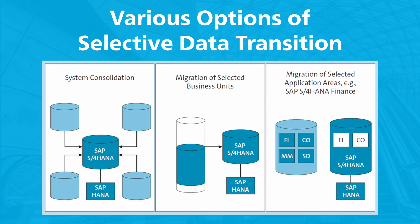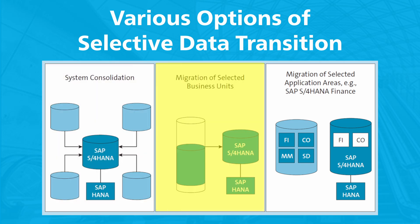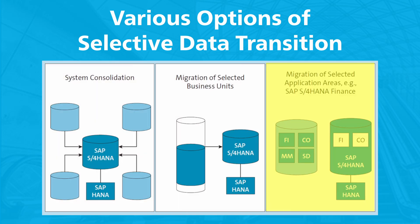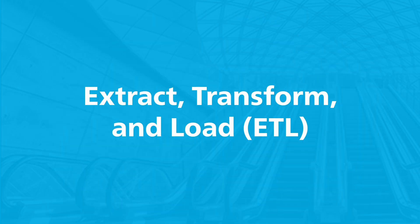This figure shows some examples of Selective Data Transition options: system consolidation — that is, the migration of functions and data from multiple source systems into an SAP S/4HANA target system; migration of selected business units of a system into the system; and migration of selected application areas into the system.